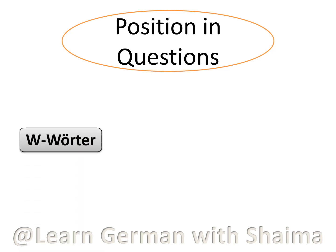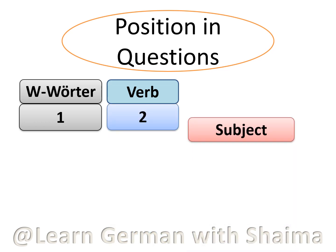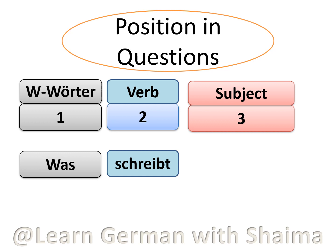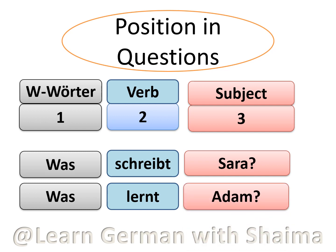Now talking about the position in W-questions — questions made with a W-question word. You always have the W-word in the beginning, so in the first position. It is always followed by a verb in the second position, and in the third position you always have the subject of the sentence. I've made questions from the statements we had previously. For example: Was schreibt Sara? — Was is the W-word in first position, schreibt is the verb in second position, Sara is the subject in third position. The second example: Was lernt Adam? — Was is the W-word, lernt is the verb in second position, and Adam as the subject comes in third position.